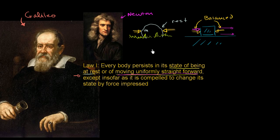What's less obvious is the idea that something moving uniformly straight forward, which is another way of saying something having a constant velocity. What he's saying is that something that has a constant velocity will continue to have that constant velocity indefinitely, unless it is acted on by an unbalanced force.